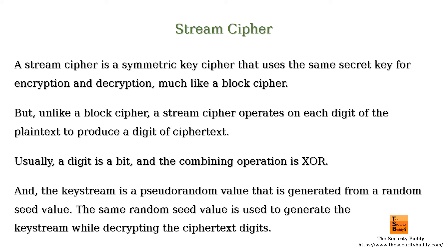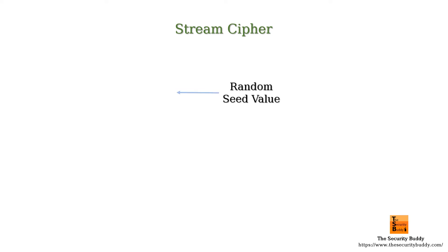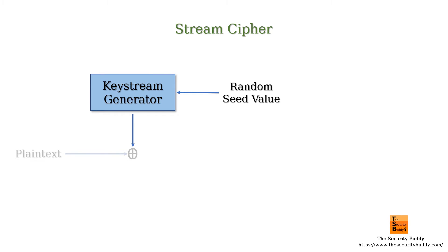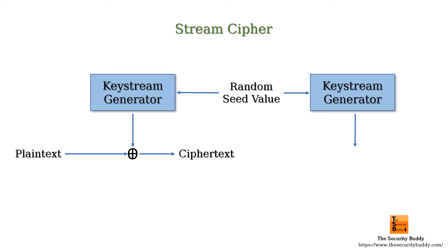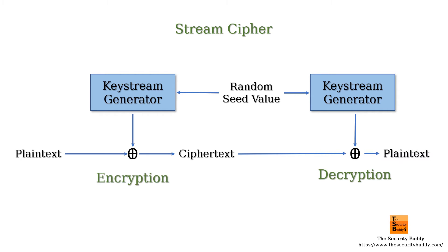To summarize, in a stream cipher we first generate a key stream from the secret symmetric key. Then each digit of the plain text is XORed with each digit of the key stream to produce cipher text digits. Similarly, at the time of decryption, the key stream is generated from the same random seed value and the generated key stream is XORed with each cipher text digit to produce plain text digits.